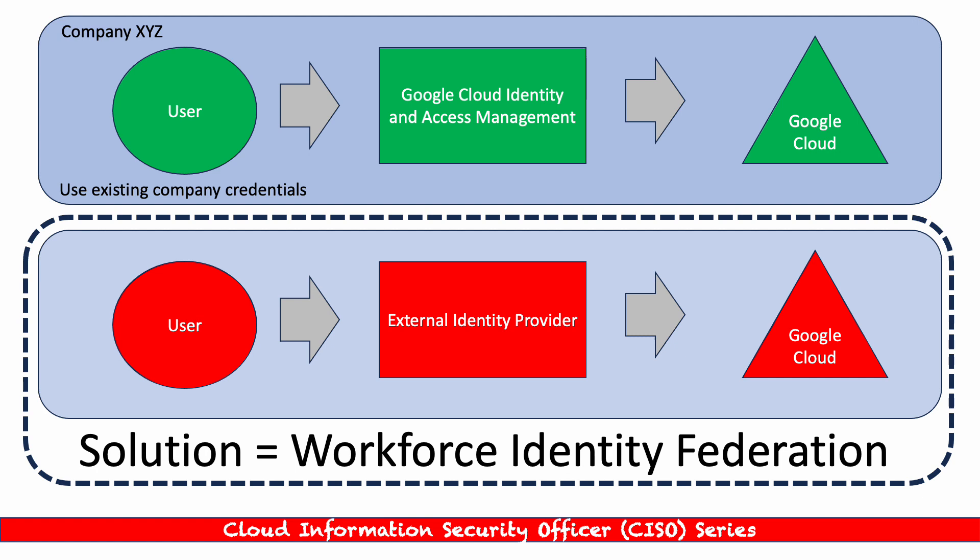Now where the problem lies is when we start to deviate from that model. So let's think of a user that's using an external identity provider, both of which is external to Google Cloud. How do we get that user to access Google Cloud API services when they're using an external identity provider? One way we could do it is we could sync the user credentials from the external identity provider into Google Cloud. But that's a lot of work, and it's not efficient.